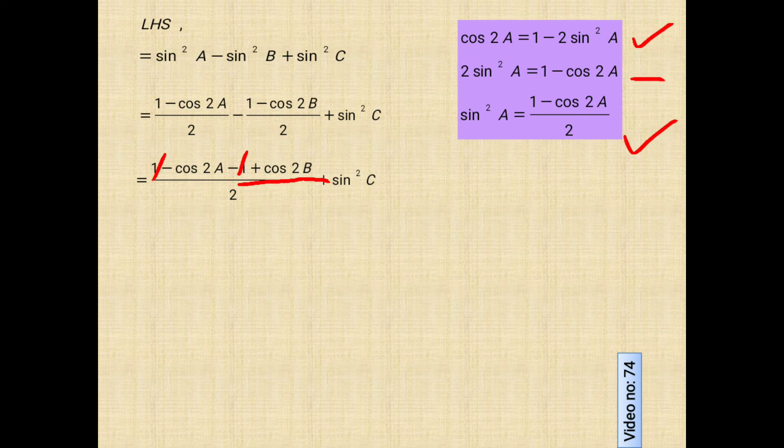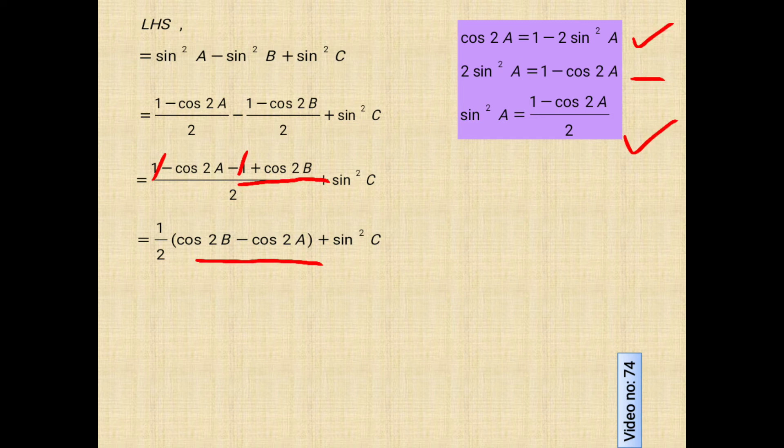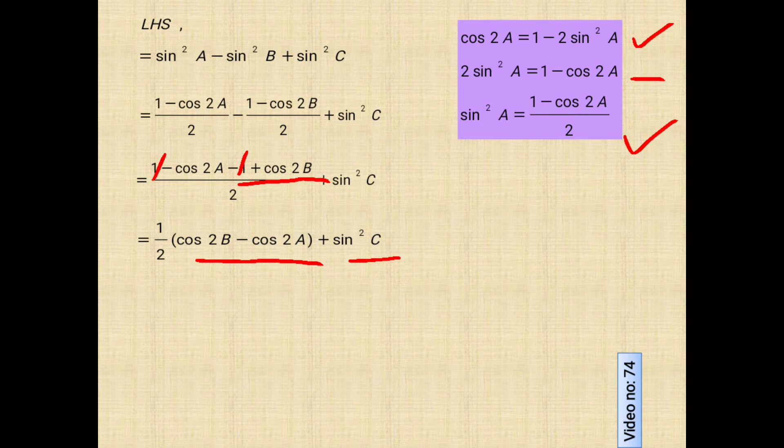Now 1 by 2 is taken as common and it remains cos 2B minus cos 2A inside the bracket. Sine square C is written the same as above. After this, cos 2B minus cos 2A can be compared with the formula cos C minus cos D.